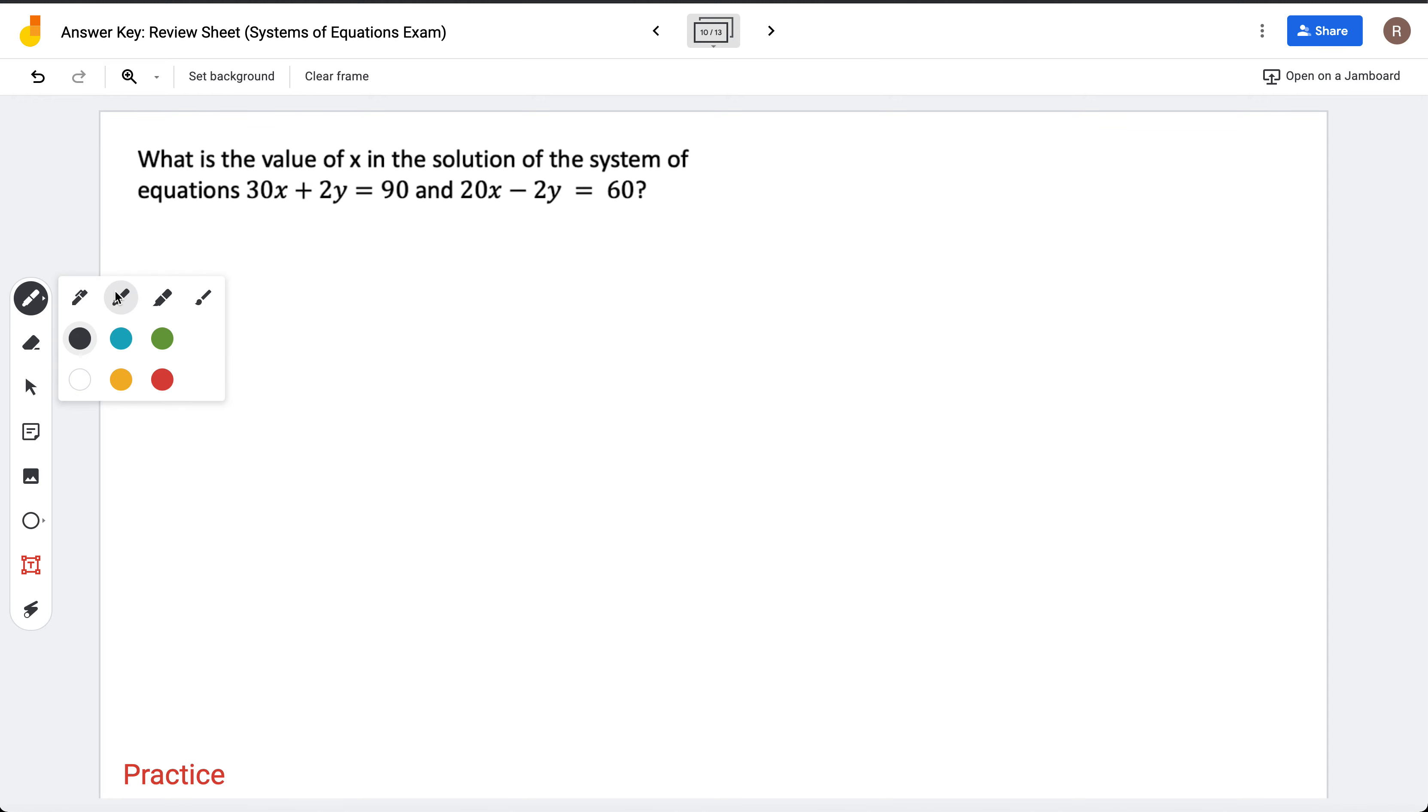So something I always notice when I deal with systems of equations, they're usually lined up one on top of each other. We don't usually see them side by side. So let's line them up one on top of each other. So 30x plus 2y equals 90. And the second equation is 20x minus 2y equals 60.